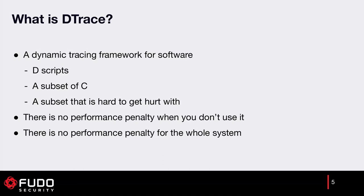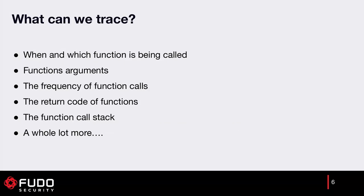When DTrace is in your operating system, there is no performance penalty — it's just there. If you enable DTrace, there will be some performance penalty only for the application and only for the things you're actually tracing — only in the places where the probes are set. What can we trace? We can create probes on which function is being called, which arguments were passed, how frequently calls are made, return values from functions and syscalls, and we can track the whole function call stack.